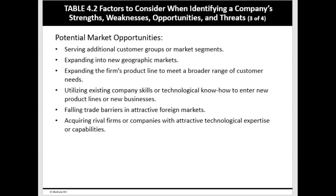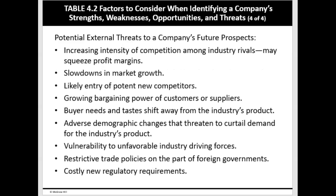This slide covers weaknesses. And then continuing, what are your potential market opportunities that could come into play? Sizing up a company's complement of strengths and efficiencies is really similar to constructing a strategic balance sheet — pros and cons — where the strengths represent the competitive side and the weaknesses represent the liabilities. Ideally, the company's competitive assets should outweigh its liabilities, or there's already trouble. This slide then covers the potential external threats to your future as a company.